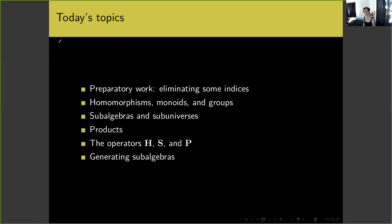Today I would like to discuss, first of all, some preparatory work where we eliminate some indices. Then I'll move on to talking about homomorphisms and how we can use those to associate monoids and groups to a given algebra. Then I'll talk about sub-algebras and their corresponding sub-universes, products, the operators H, S, and P, and finally generating sub-algebras from a subset of our universe.